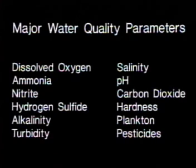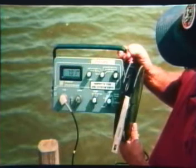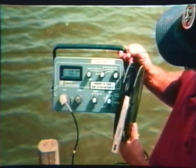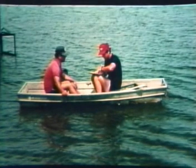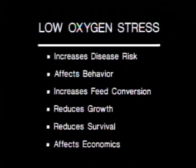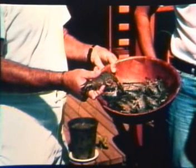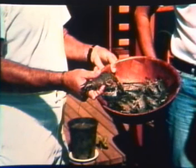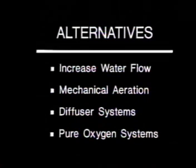Several water quality parameters are important to aquaculturists. The most critical factor is dissolved oxygen, or DO. Low dissolved oxygen levels stress organisms, reduce growth, increase disease and mortality rates, affect feed conversion ratios, and even affect behavior. Fish and shrimp will move to the water's surface in search of oxygen. All of these factors affect the overall economics of aquaculture.